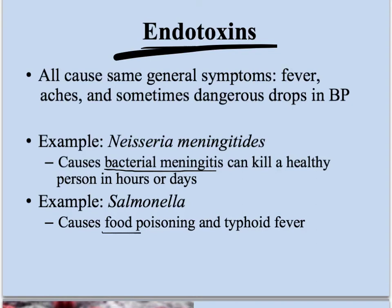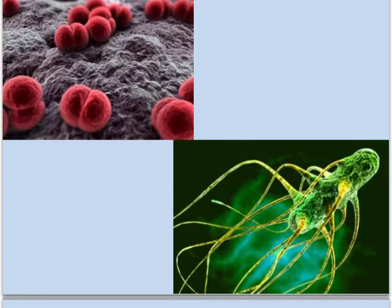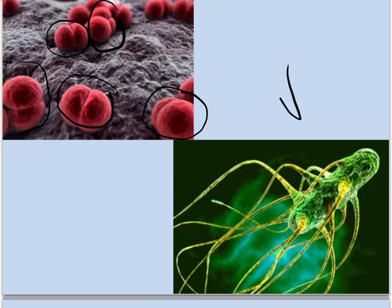Salmonella — we've all heard of this. It causes food poisoning, but it also causes typhoid fever. You get typhoid fever from ingesting fecal particles — it gets into your food or your water supply and then you get sick. This is Neisseria meningitidis — these little spherical coccus bacteria. And then this is salmonella — this is what builds up on your food and then you eat it and get sick.